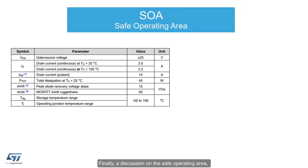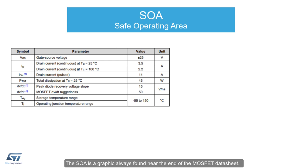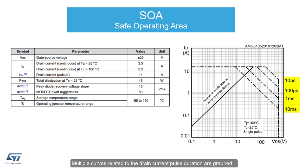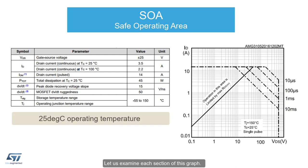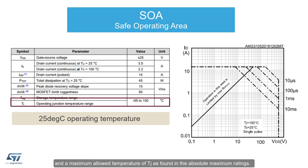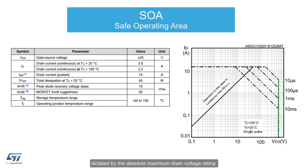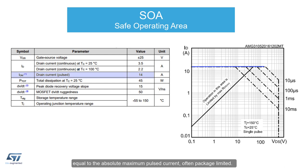Finally, a discussion on the safe operating area, or SOA, of the MOSFET helps to tie together some of the concepts discussed related to the absolute maximum ratings. The SOA is a graphic always found near the end of the MOSFET datasheet. The drain-source voltage is plotted on the x-axis and the drain current on the y-axis. Multiple curves related to the drain current pulse duration are graphed. Note that the curves assume an operating case temperature of 25 degrees Celsius, and a maximum allowed TJ is found in the absolute maximum ratings. This curve is mostly related to maximum power dissipation, akin to the way we derive the P-TOT parameter. The vertical curve boundary shown in green is dictated by the absolute maximum drain voltage rating and is independent of the drain current.